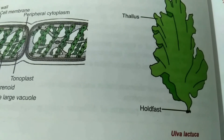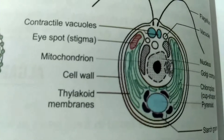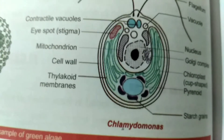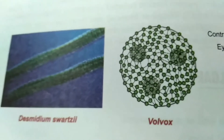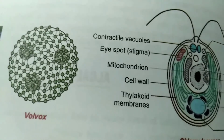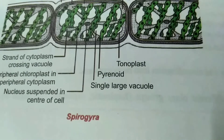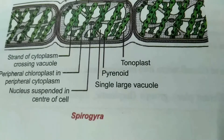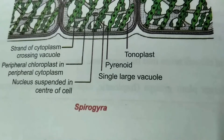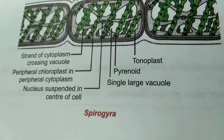Another example of Chlorophyta is Ulva. Next is Chlamydomonas — this is a picture of Chlamydomonas algae. And this is Volvox. So Volvox, Chlamydomonas, Ulva, and Spirogyra all come under Chlorophyta — green algae. They are commonly called green algae. Their photosynthetic pigment is chlorophyll A and B. Their stored food is starch, which is stored in the pyrenoid.